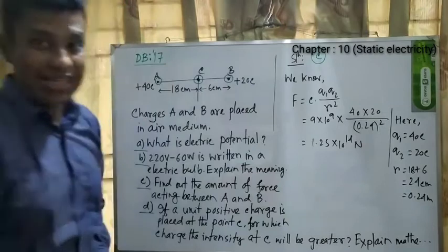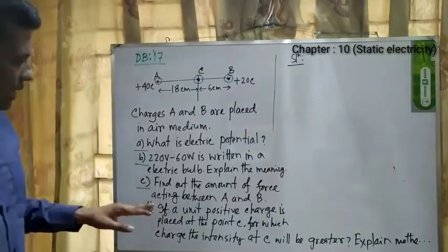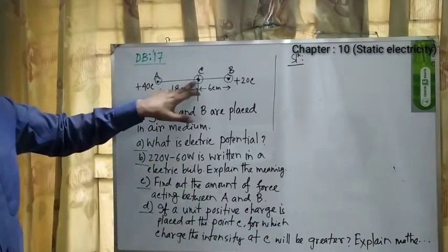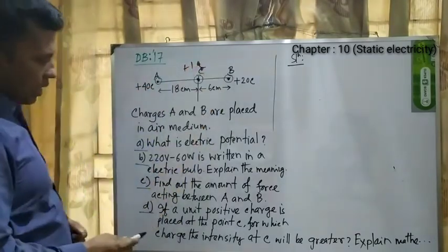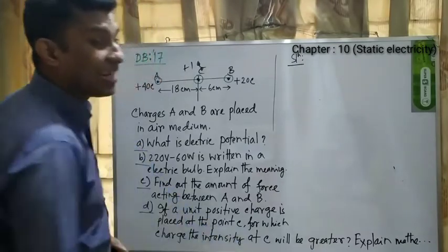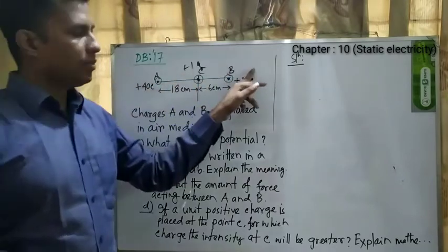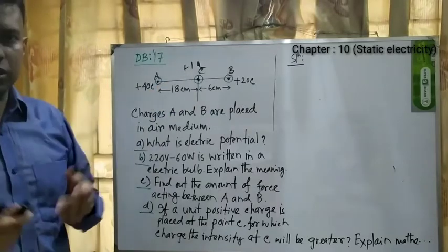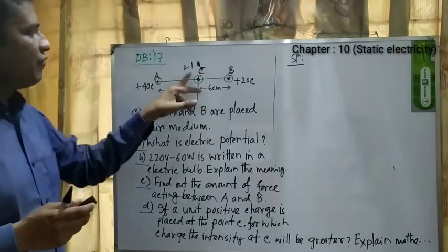Now we go to question D: if a unit positive charge is placed at point C, for which charge — A or B — is the electric field intensity at C greater? We have to calculate the intensity at C for both charges A and B.